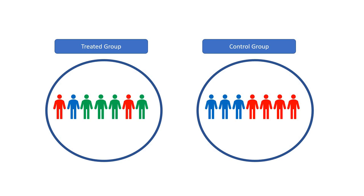For example, if the government is interested in increasing the yield per acre by farmers and they want to train the farmers, and in that specific region there are 50,000 farmers and the government trained 10,000 of them. After that training, what they are interested in is the impact of that specific training. Those 10,000 that received the training are actually the treated group, and those 40,000 that haven't received the training are actually the control group.